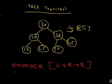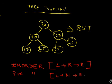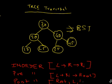In pre-order traversal, you traverse the root first, then the left child, then the right child. In post-order traversal, you traverse the left child first, then the right child, and then the root.